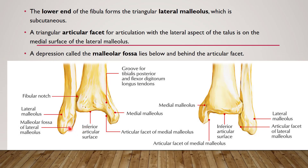At the lower end of the fibula, we have learned three key structures: an articular facet that articulates with the lateral part of the tibia, a facet that articulates with the talus bone, the lateral malleolus itself, and the malleolar fossa of the lateral malleolus.